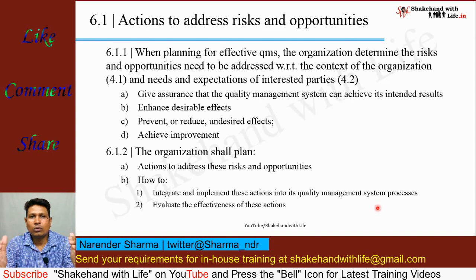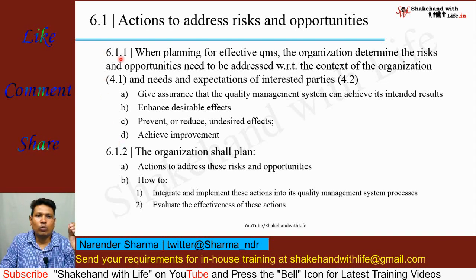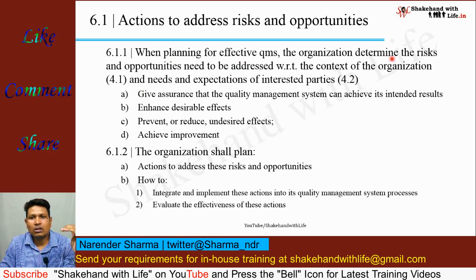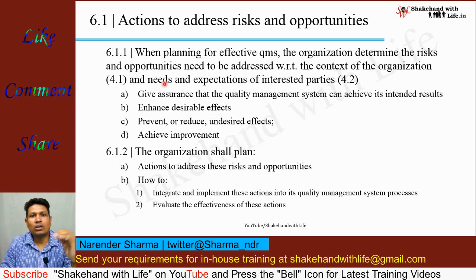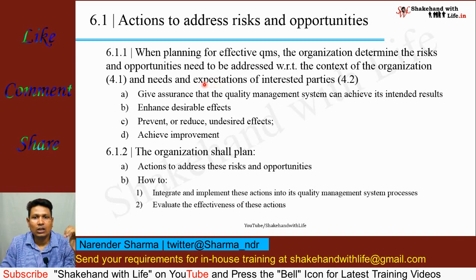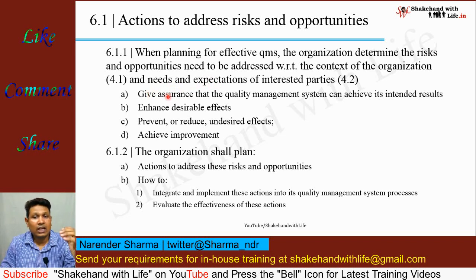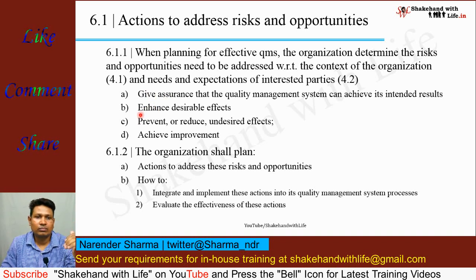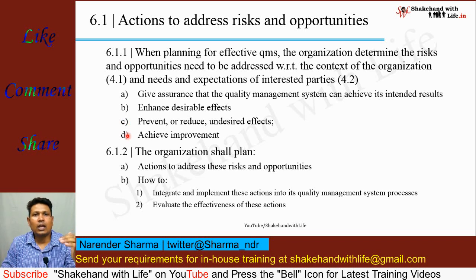Clause 6.1 has two sub-clauses. Sub-clause 6.1.1 is about planning for an effective quality management system. The organization determines the risks and opportunities to be addressed with respect to the context of the organization — internal and external issues from clause 4.1 — and needs and expectations of interested parties from clause 4.2. The organization's actions give assurance that the QMS can achieve its intended results, enhance desirable effects, prevent or reduce undesired effects, and achieve improvements.